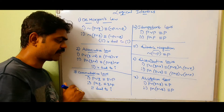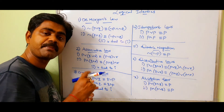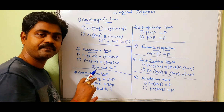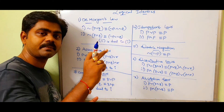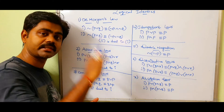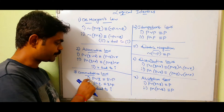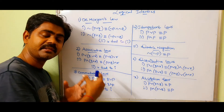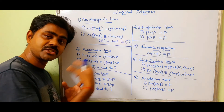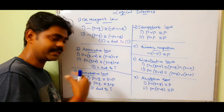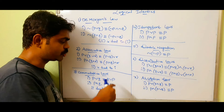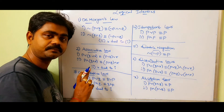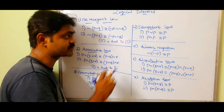Next, commutative law. Commutative law states: P OR Q equals Q OR P. So what about its dual? OR will be changed to AND, so P AND Q equals Q AND P. So formula 2 is dual to formula 1.